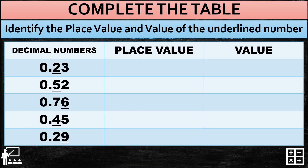Let's complete the table by identifying the place value and value of the underlined number. The underlined numbers are 2, 5, 6, 4, and 9. For number one, the underlined number is 2. Its place value is tenths because it is on the first digit after the decimal point. Since the tenths place is written as one decimal place, the value is 0.2.